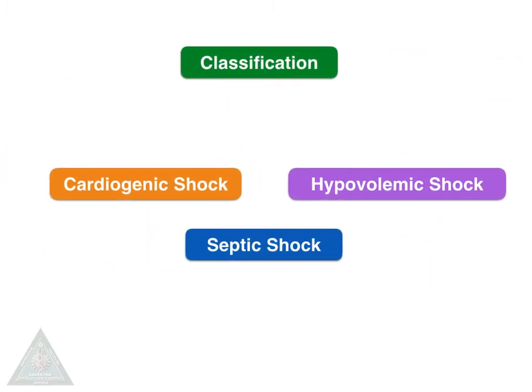Coming to the classification of shock, it is divided into three categories according to its etiology: cardiogenic shock, hypovolemic shock, and septic shock.